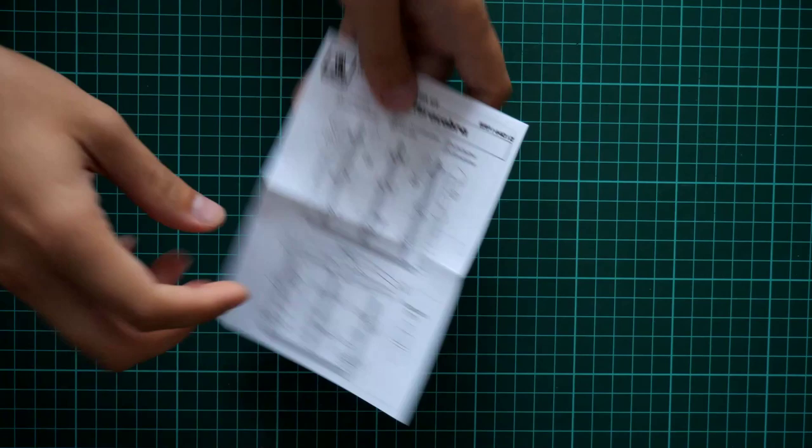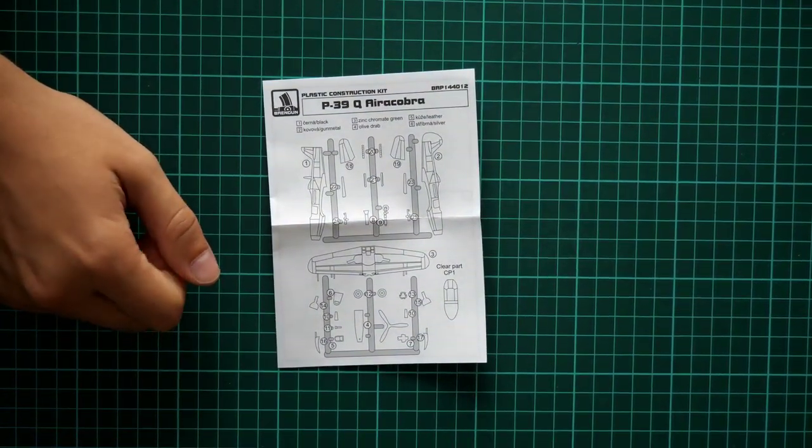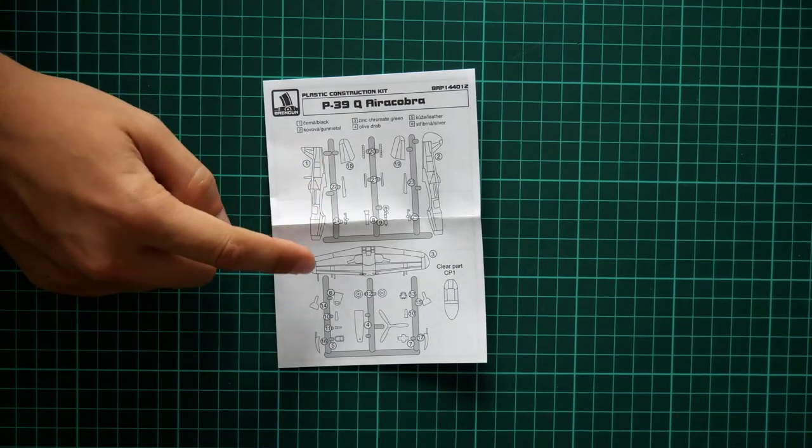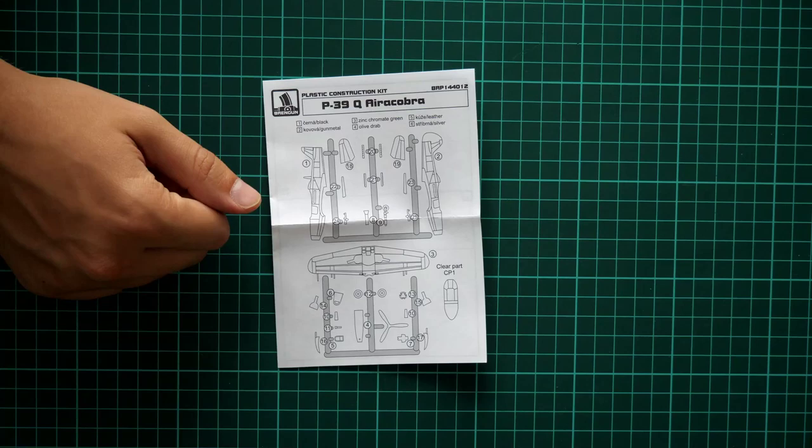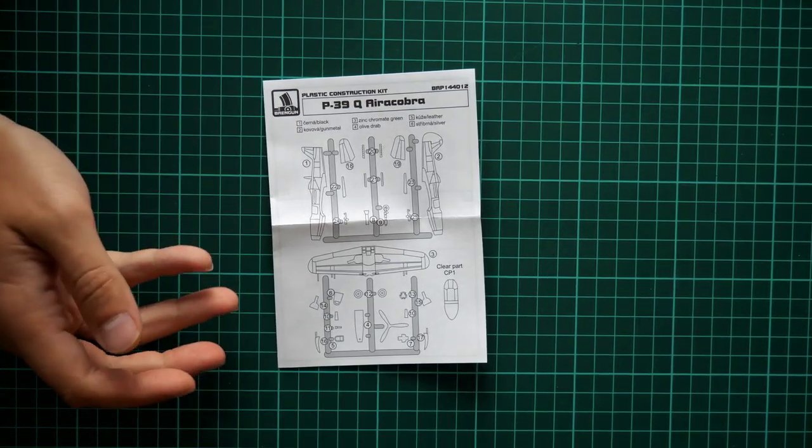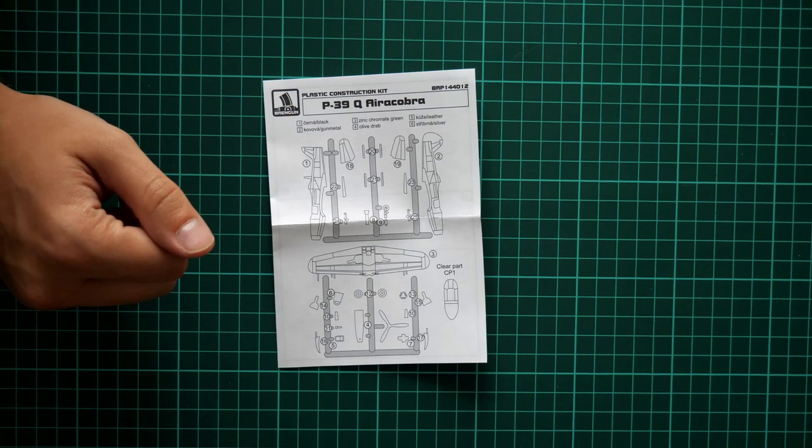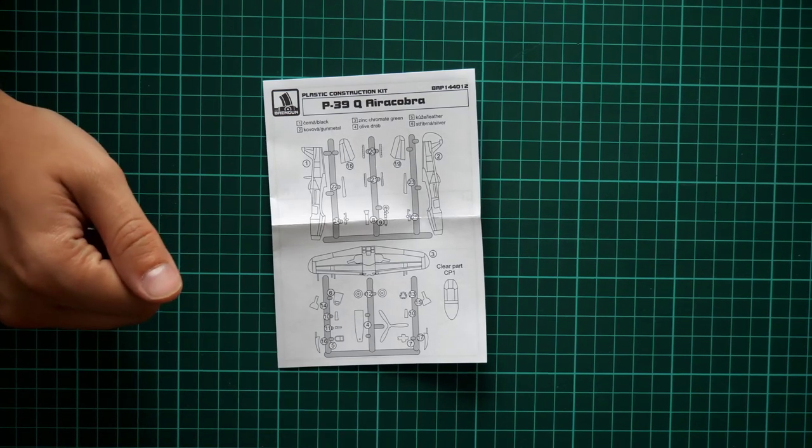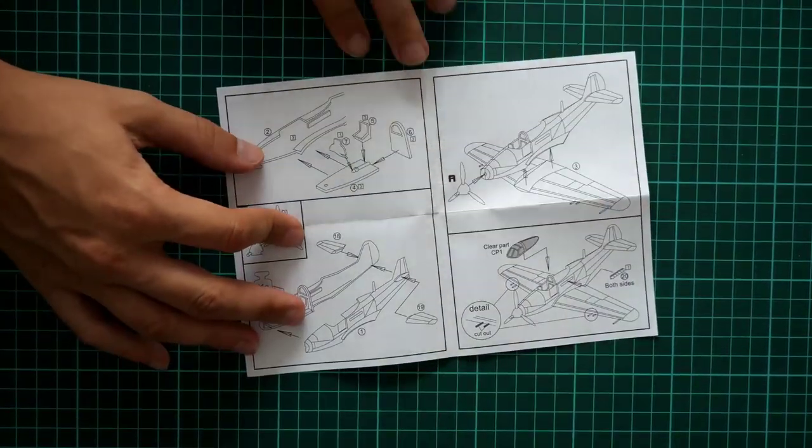And next we have, last but not least, this thing. It's assembly manual, obviously. As you can see, it is a simple black and white brochure. It is featuring the parts map on the first page. There is no history note about this famous aircraft. So if you would like to know more, you have to find some reference book about this P-39 aircraft.